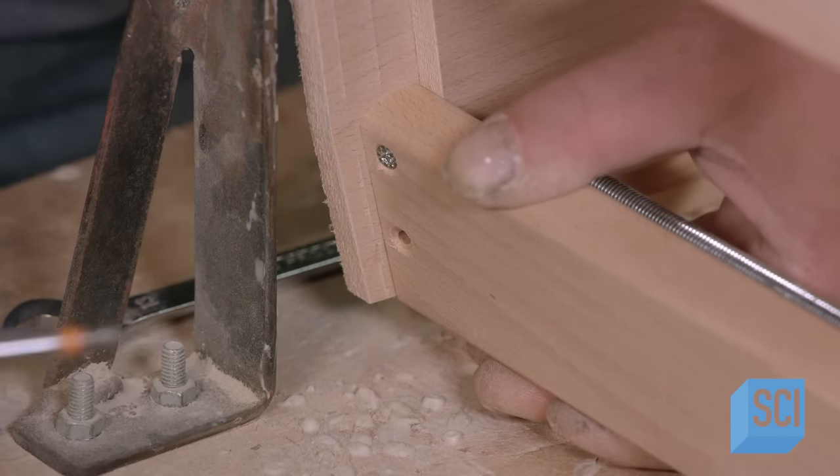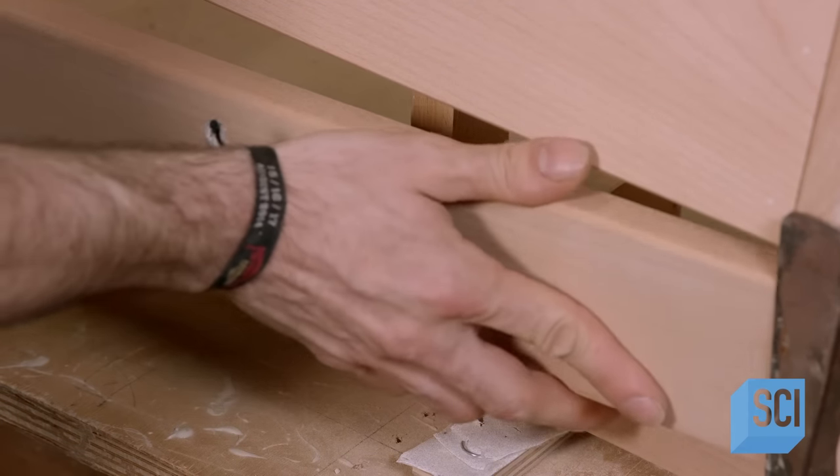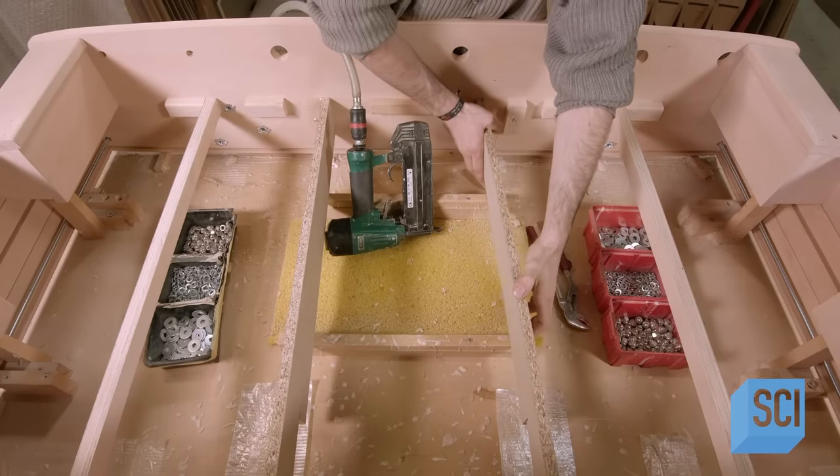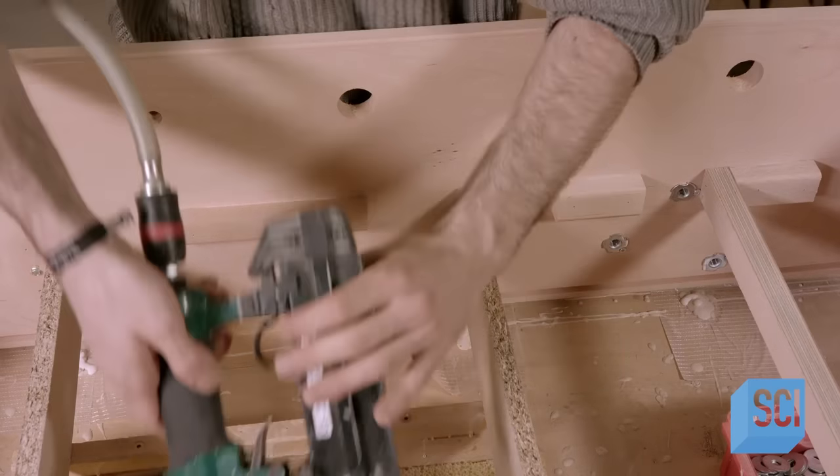After closing up the ends with wood panels, workers install wood support bars which will reinforce the table and, after a goal, direct the ball to the ball return tray.